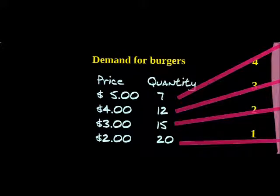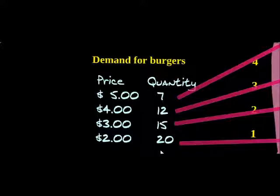Let's imagine it was third period and I pulled up my barbecue grill and started making some hamburgers. If I was to sell these hamburgers for $5 a hamburger, students would want to buy seven of them. At $4, they would want to buy 12. At $3, now 15 students want to buy burgers. At $2, they want to buy 20, and so on. This is called a demand schedule.